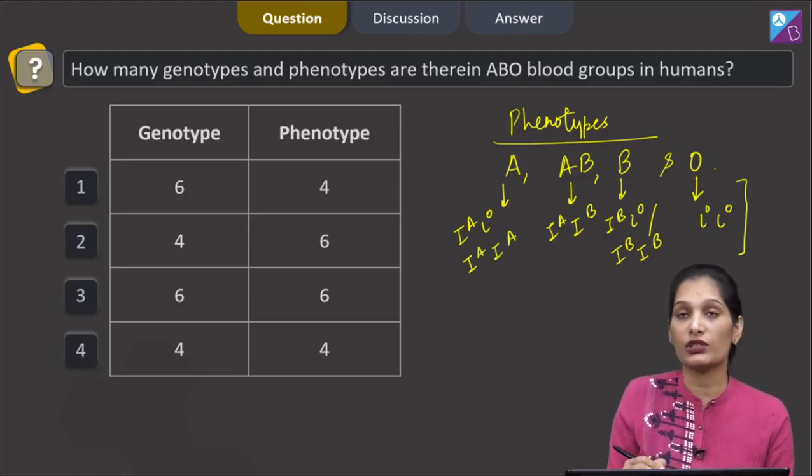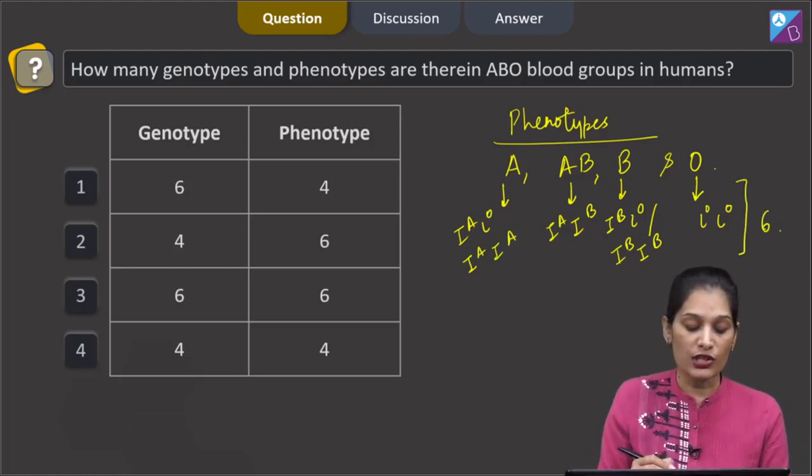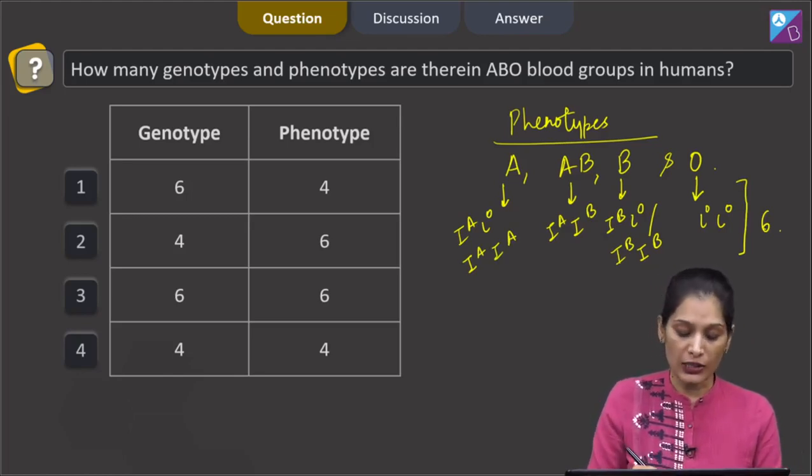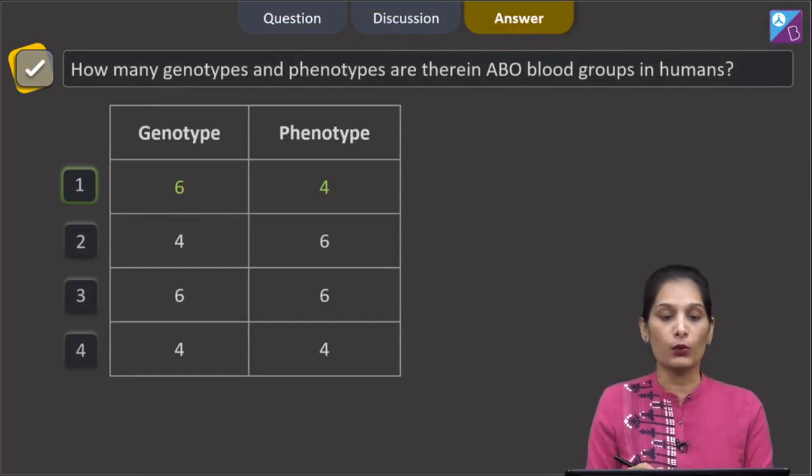So if you count the total number of genotypes, they are six. So the genotypes will be six and the phenotypes will be four. So the correct option for the given question is option number one.